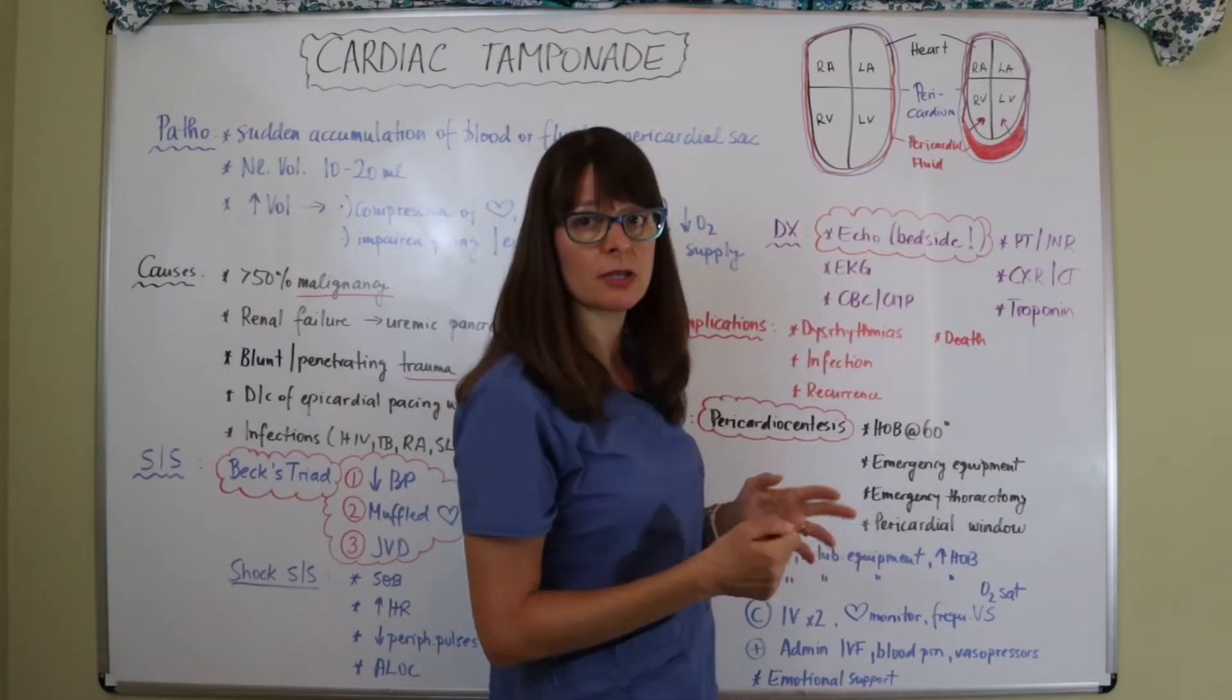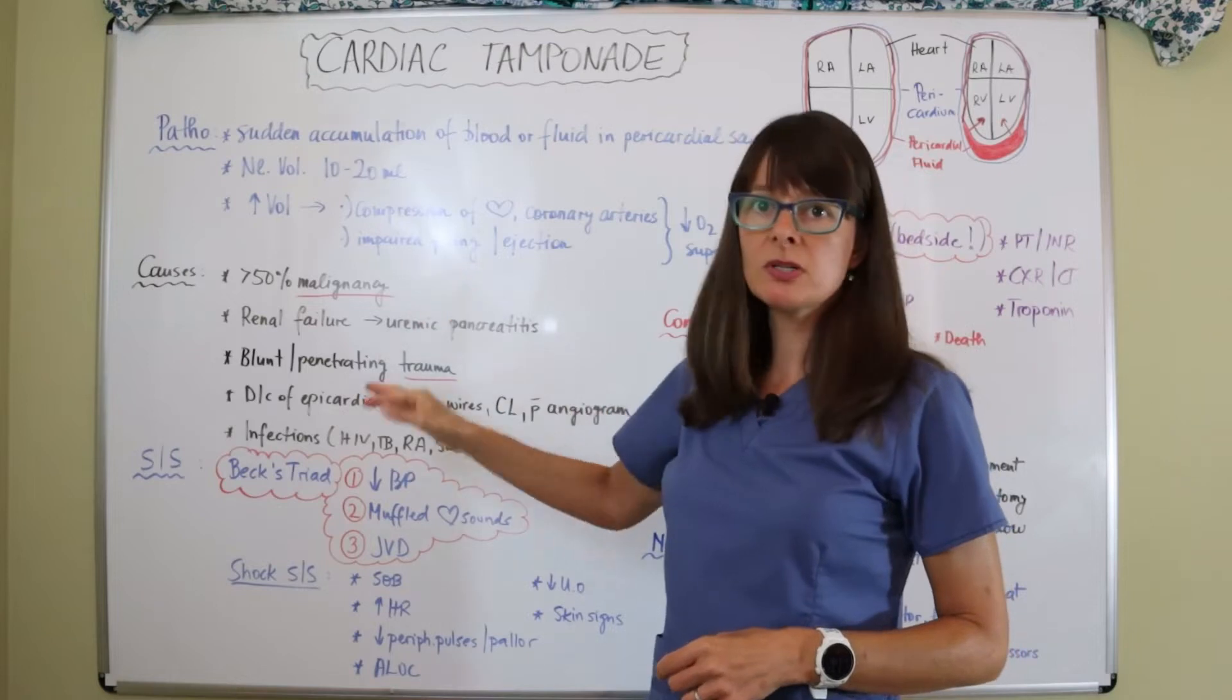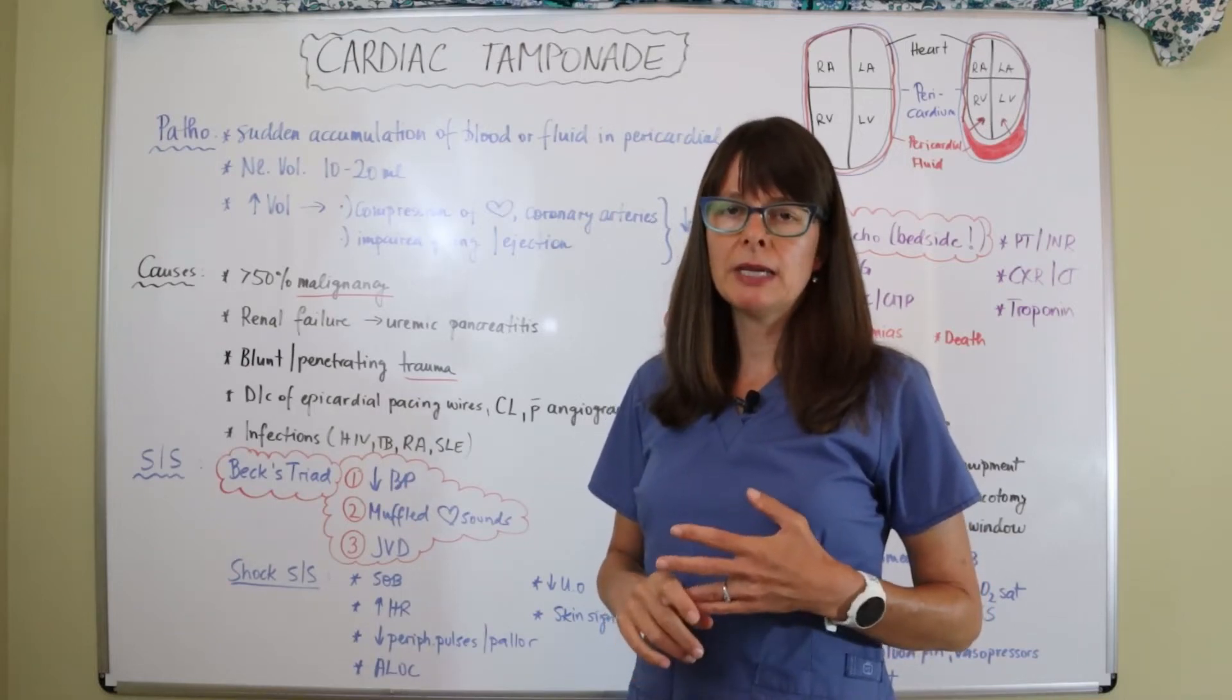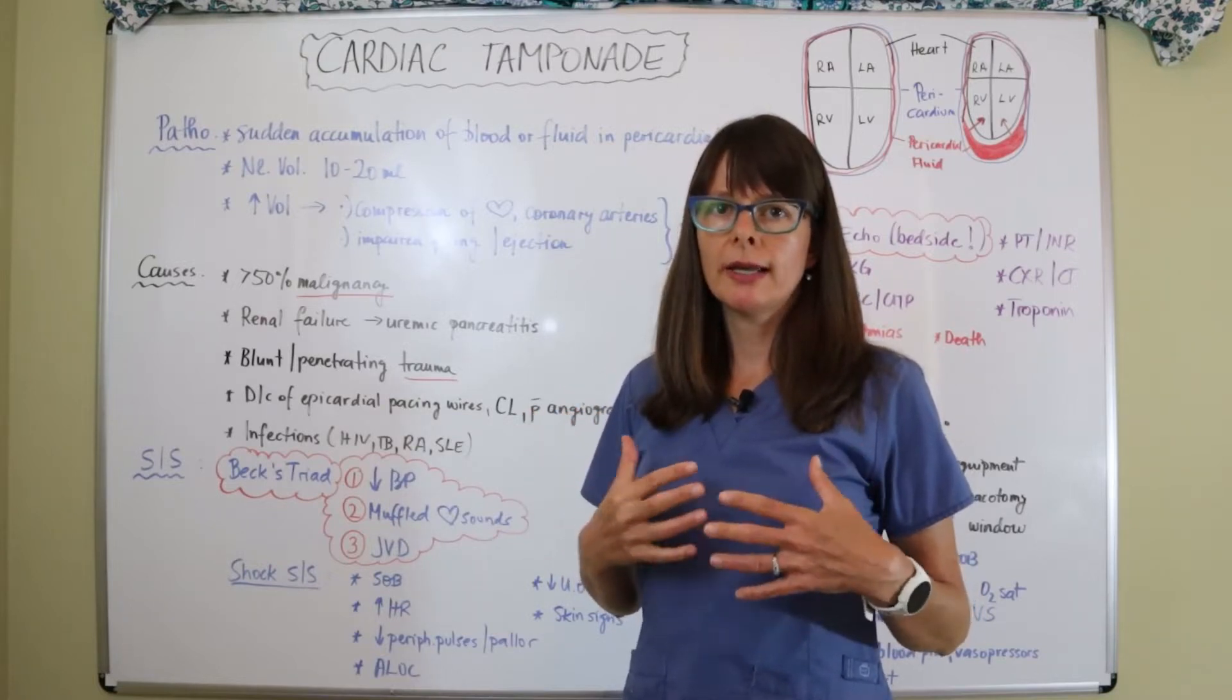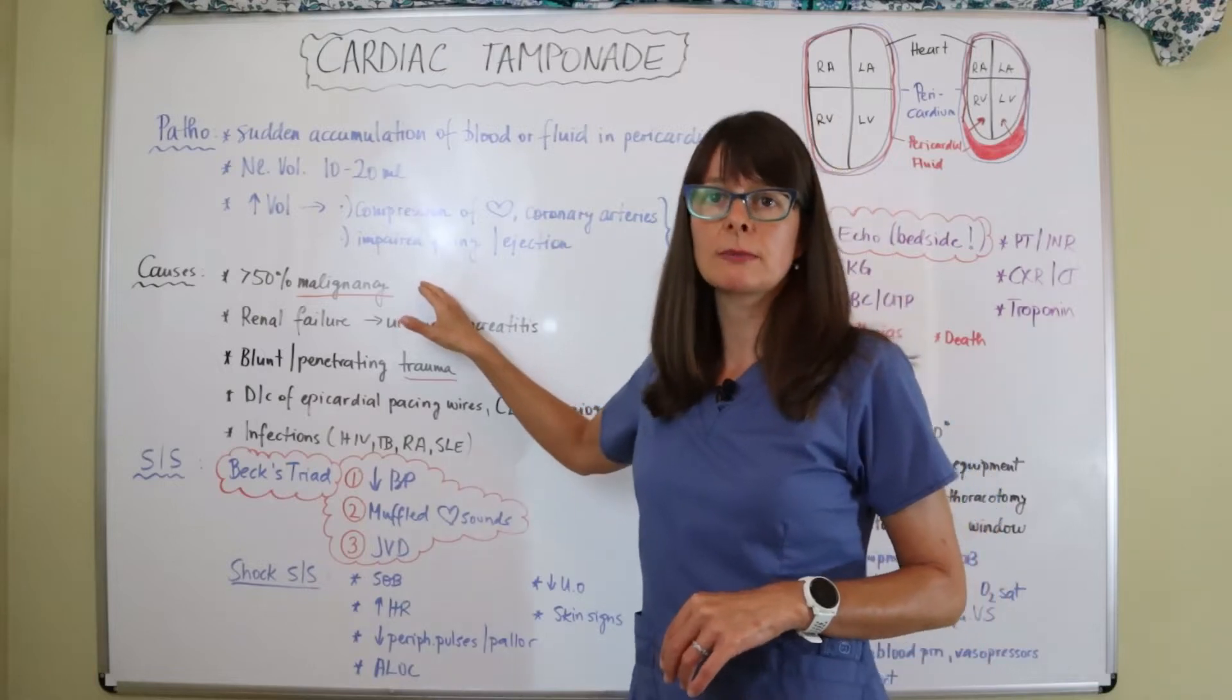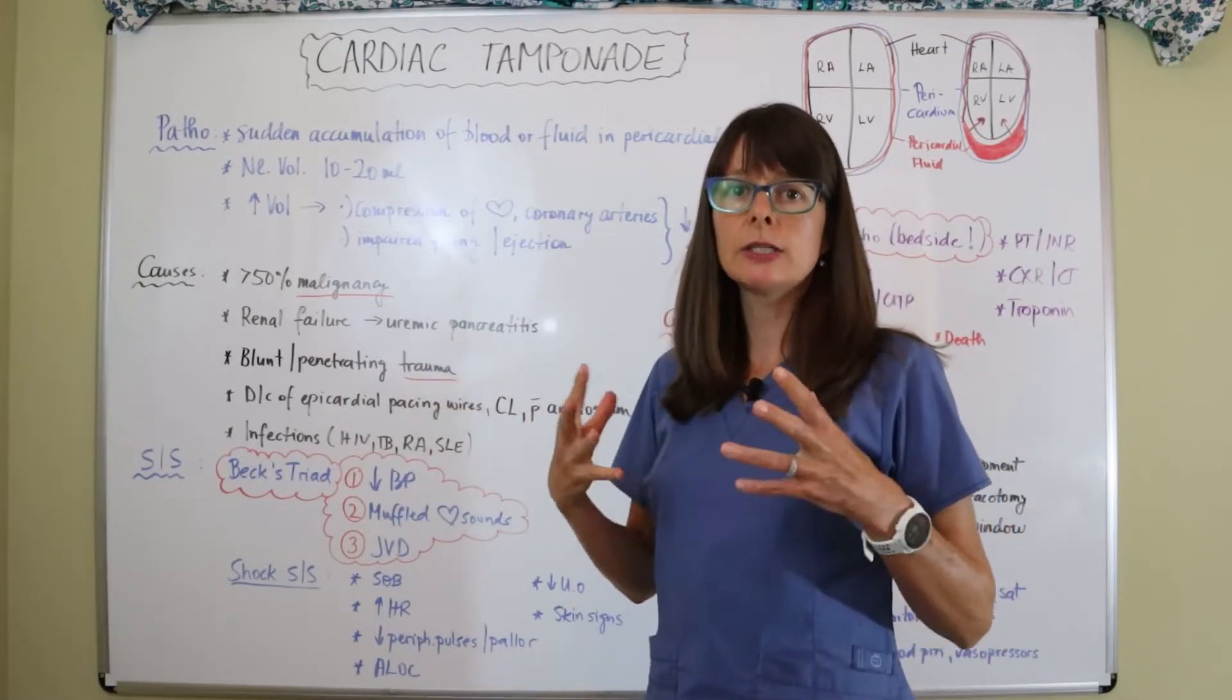In terms of causes, 50 percent of pericardial effusions and tamponades are caused by malignancies in the body, and that can be anything from multiple myeloma or lung cancer and anything that has spread to the thoracic cavity and then the heart muscle itself. So 50 percent, half of all cases, are because of some sort of cancer related. But it can also be due to renal failure and then the patient will have uremic pericarditis which then can lead to the build up in the pericardium of that fluid.